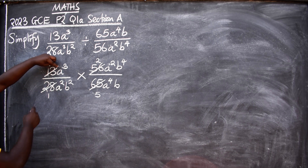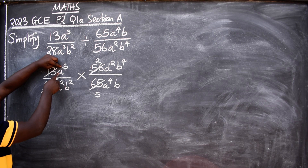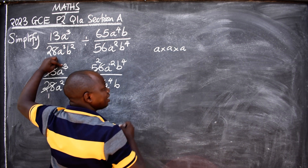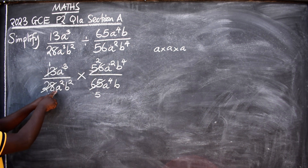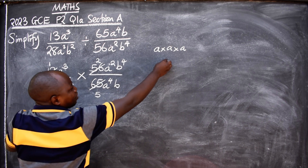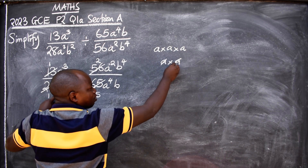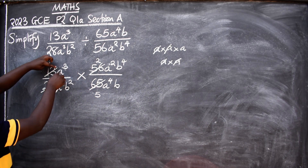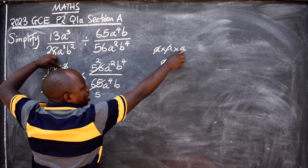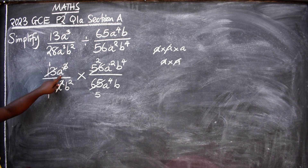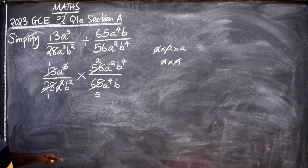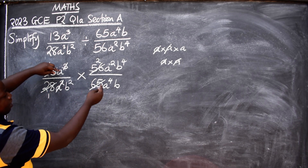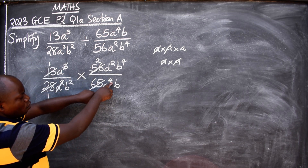I have three a's here — that is the meaning of a³: a times a times a. I have three of them. How many do I have in the denominator? Two. So I'll cancel two of them here and cancel two there. When I cancel two, one a will remain.